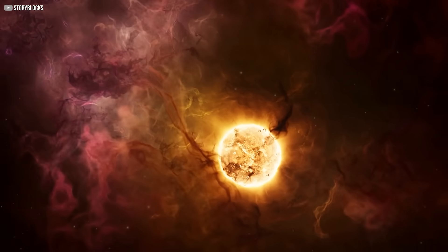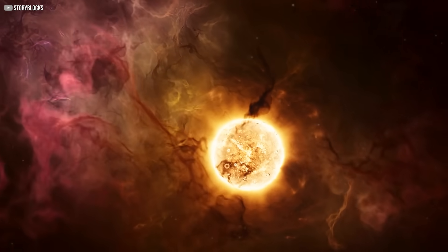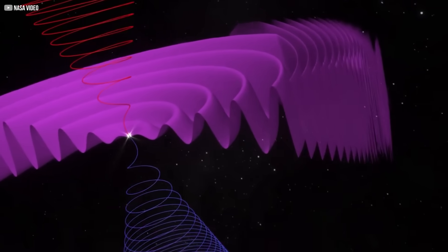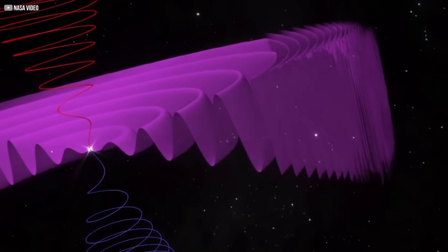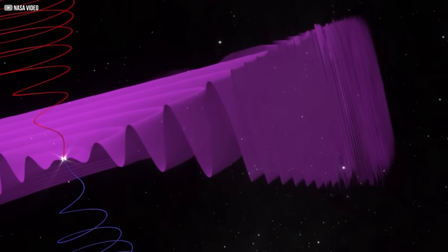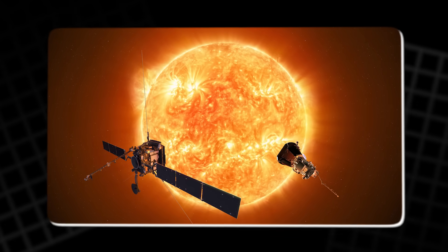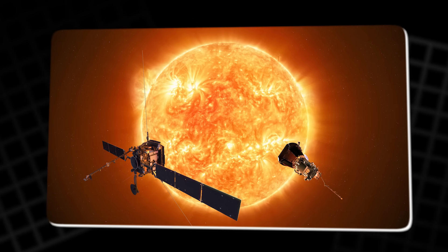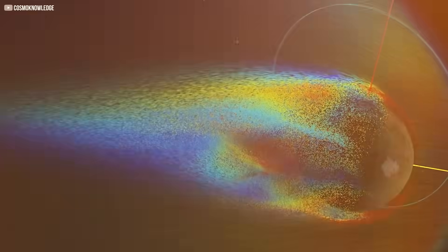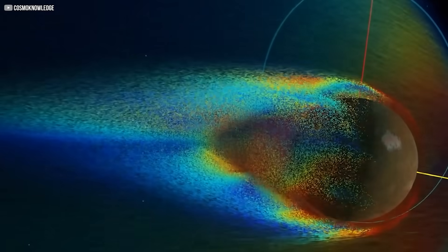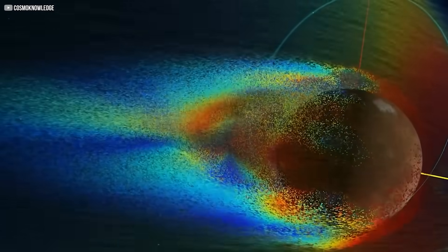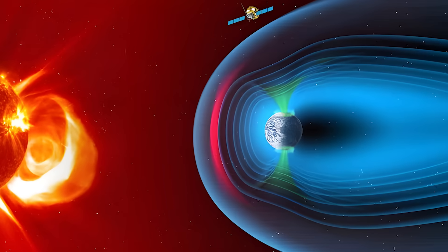This constant change makes the heliopause a flexible region, constantly shifting as the Sun's behavior changes over time. What's fascinating is that this boundary is not a solid, permanent feature. It is a fluid transition zone where the solar wind and the interstellar medium meet and interact, creating a dynamic environment that challenges traditional notions of how we think about boundaries in space.